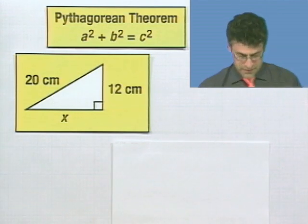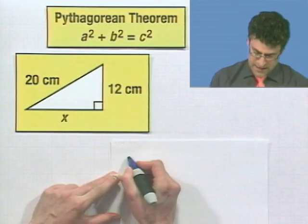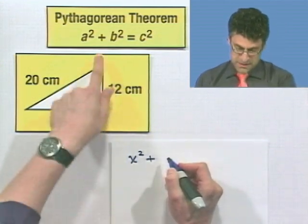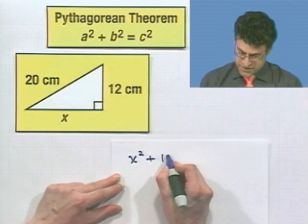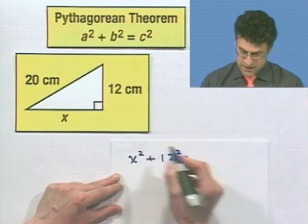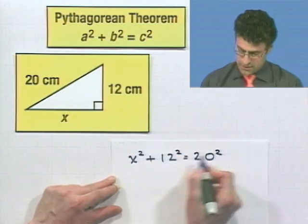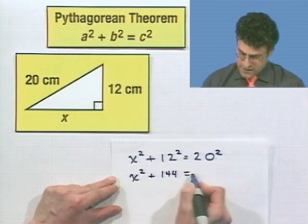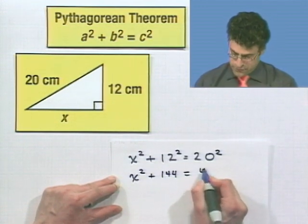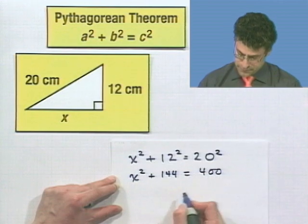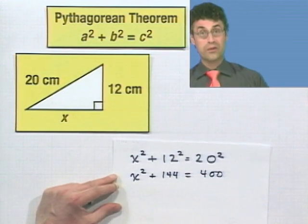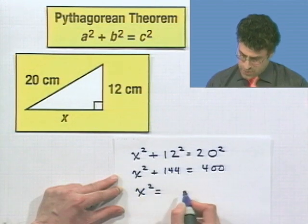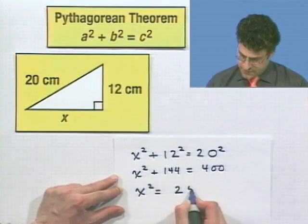So what do I know? I know that X squared, that length squared, plus this leg squared, which is 12 squared, is going to equal the hypotenuse squared. Or X squared plus 144 equals, and then 20 squared is 400. If I subtract 144 from both sides, I see that X squared equals 256.